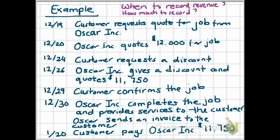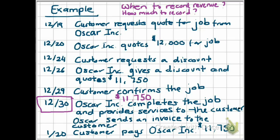Looking at the dates, December 30th is the date that we provided the service to the customer. How much should we record? It's the amount of services provided, which was $11,750. So on December 30th, we would credit revenue for $11,750 because providing services to the customer means that we earned revenue of $11,750. And since the customer has not paid us yet, we would record that as an accounts receivable for $11,750, meaning we are waiting to receive that amount for completing the job.